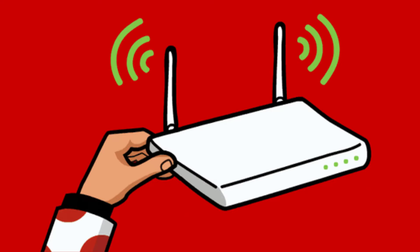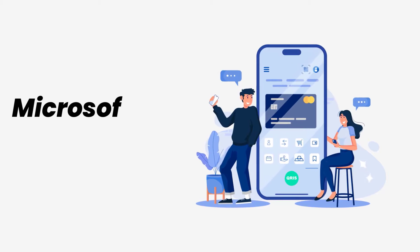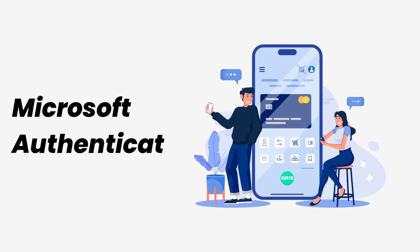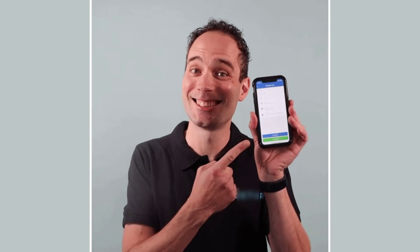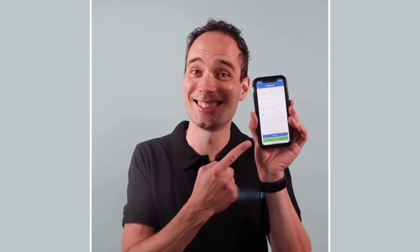First of all, you need to make sure you have a strong and stable internet connection. To do so, do a quick test to check if your internet is working — simply open up an app that runs on the internet, other than the Microsoft Authenticator app, and check if it's working.